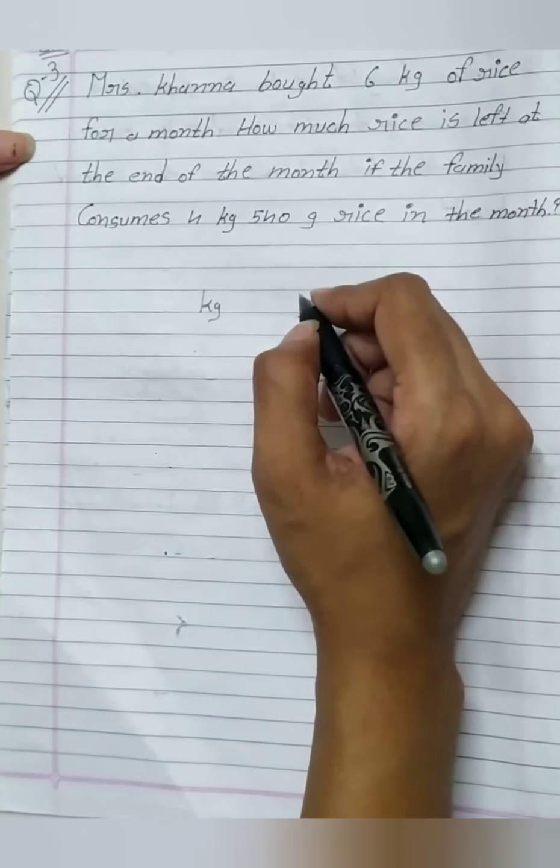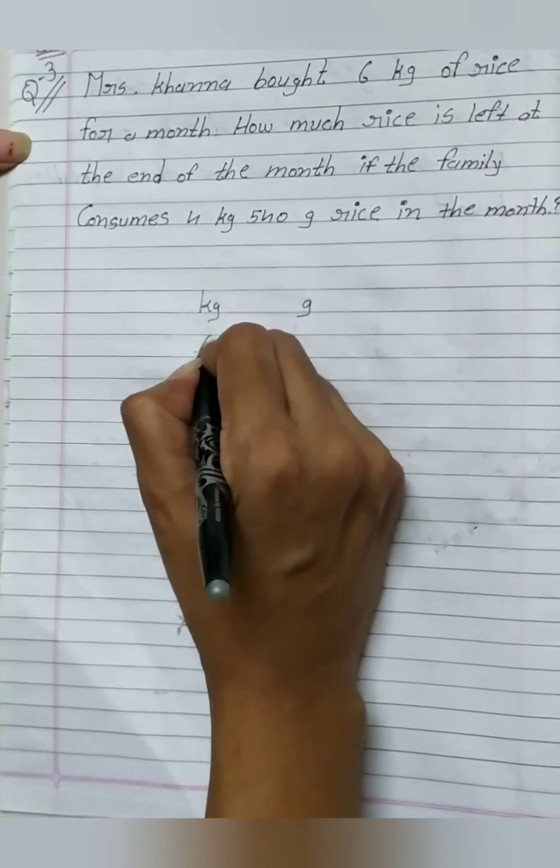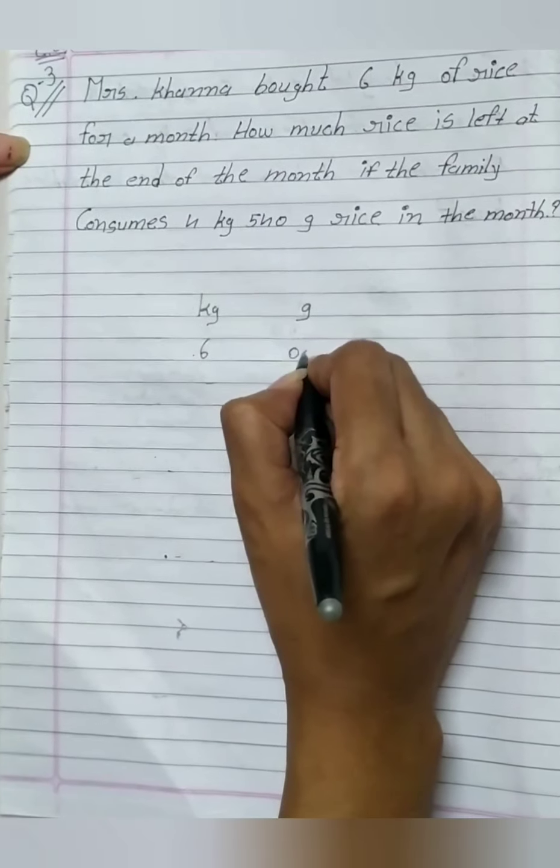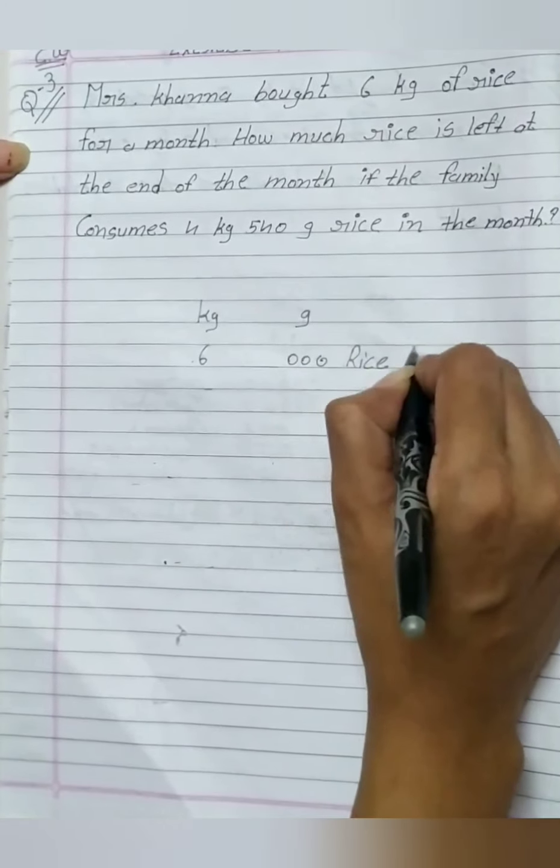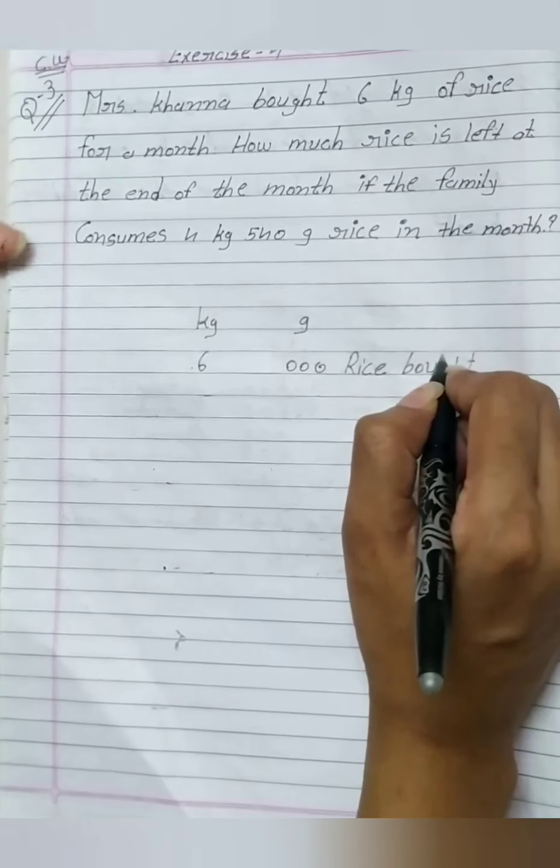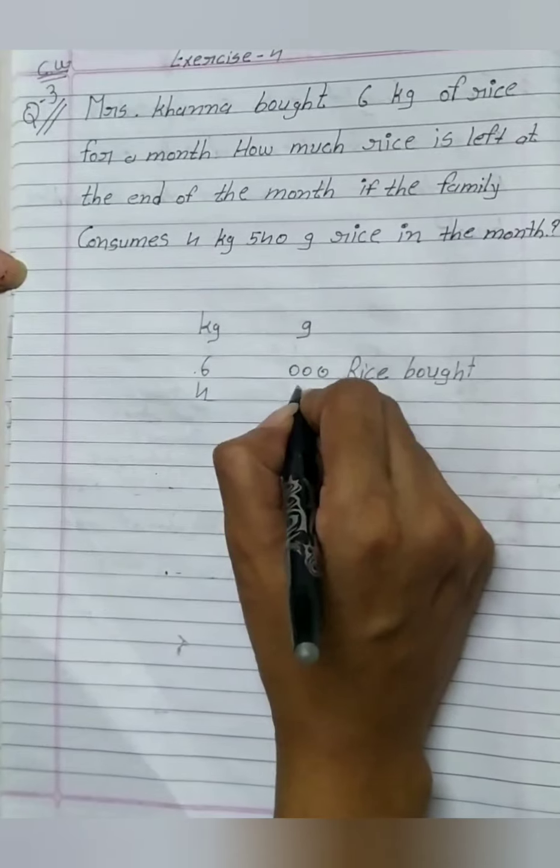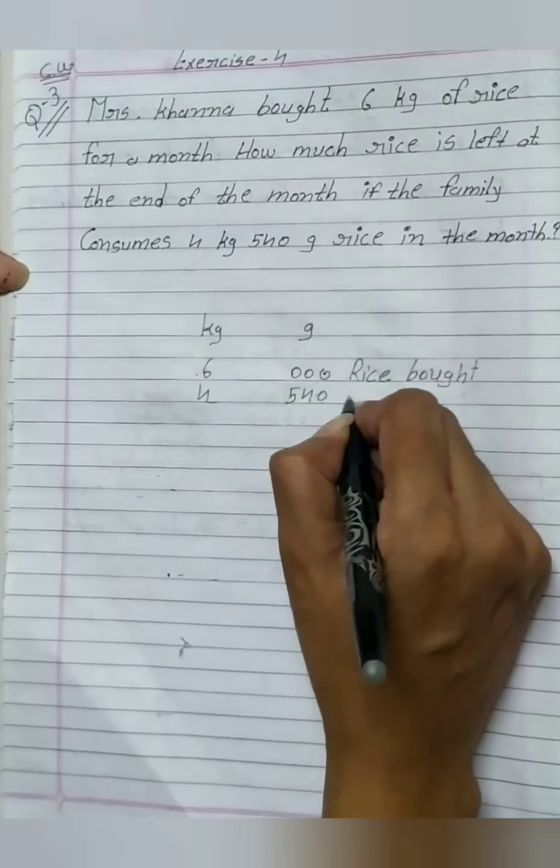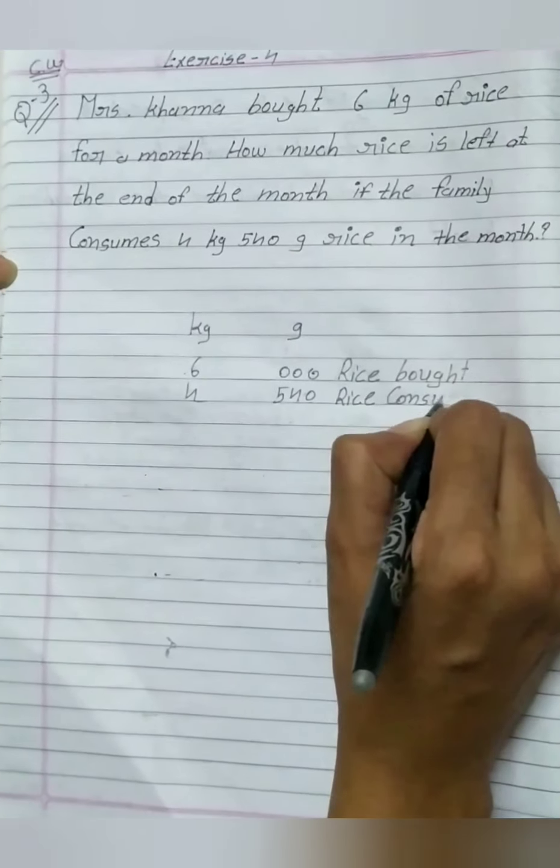Now Mrs. Khanna, how many rice bought? Mrs. Khanna bought 6 kg rice bought. And how many kg rice consumed? 4 kg 540 gram rice consumed.